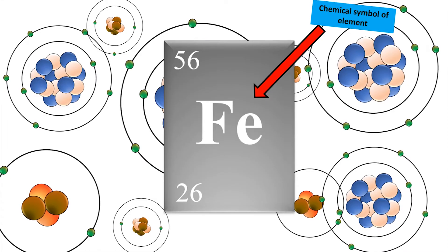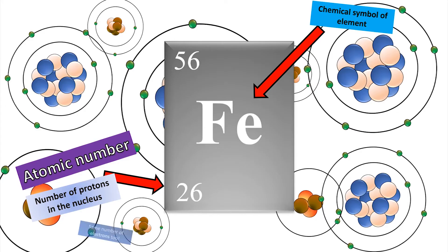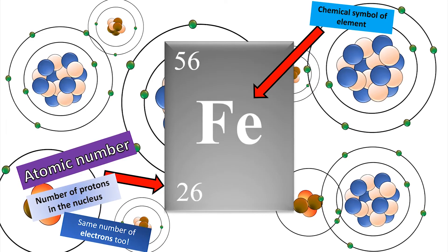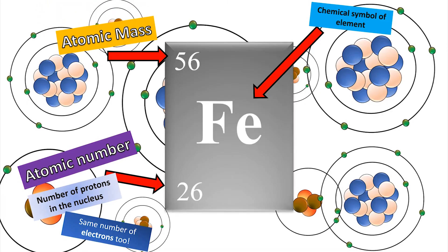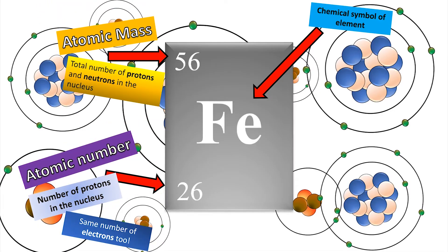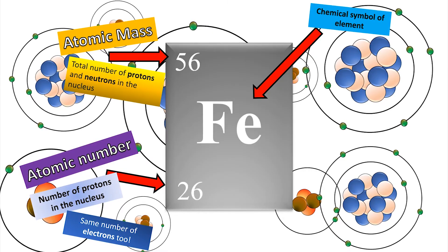So what do these numbers mean then? Well, this is called the atomic number, and that tells us the number of protons in the nucleus. It will also have the same number of electrons. The top number is a bit complicated. It's called the atomic mass. It's the total number of protons and neutrons in the nucleus, which is a strange thing to tell us.